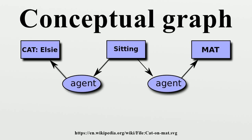The diagram on the right is an example of the display form for a conceptual graph. Each box is called a concept node, and each oval is called a relation node. In CGIF, this CG would be represented by the following statement: CAT[C], [sitting *X], [mat *Y]. In CGIF, brackets enclose the information inside the concept nodes, and parentheses enclose the information inside the relation nodes. The letters X and Y, which are called co-reference labels, show how the concept and relation nodes are connected.